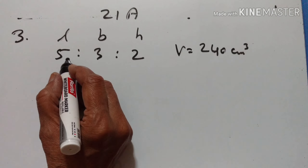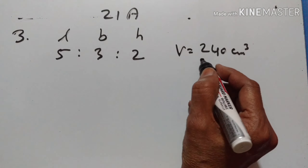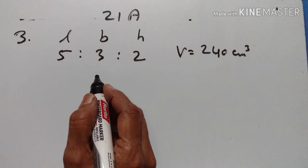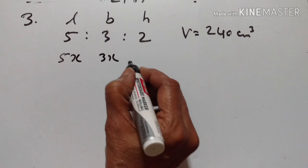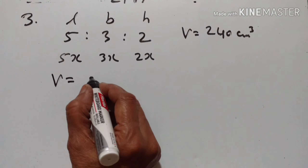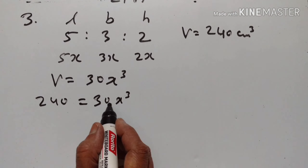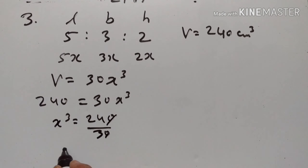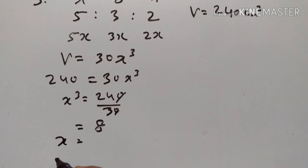In the third problem, length, breadth, and height of a cuboid are in the ratio 5:3:2 and volume = 240 cm³. Let length = 5x, breadth = 3x, height = 2x. Volume = 5x × 3x × 2x = 30x³. So 30x³ = 240, x³ = 8, therefore x = ∛8 = 2.